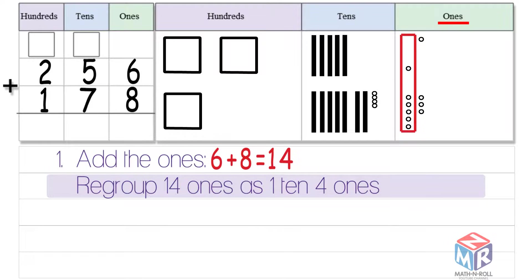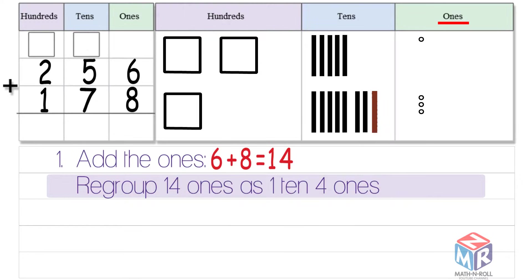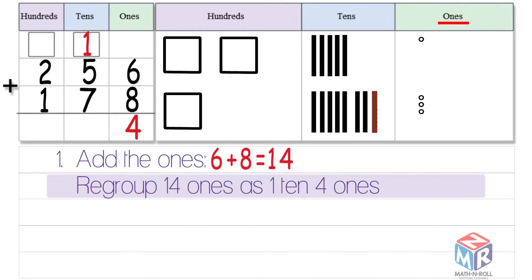You can see ten ones transferred to the tens column to make an extra ten. We write this extra ten at the top of the tens column. Now we're left with four ones.